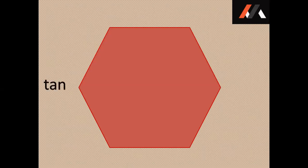First, we'll be learning reciprocals of trigonometric functions. To learn the reciprocals of trigonometric functions, we need a hexagon. We all know that tan is equal to sin by cos. Let us apply that formula in this hexagon. Tan is equal to sin by cos.